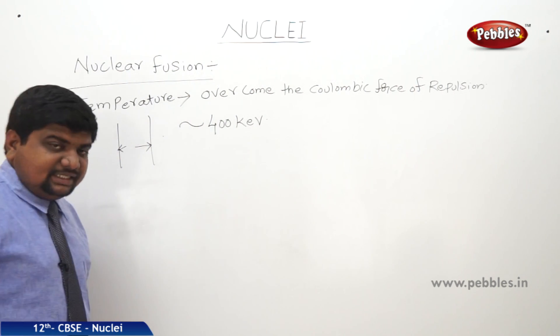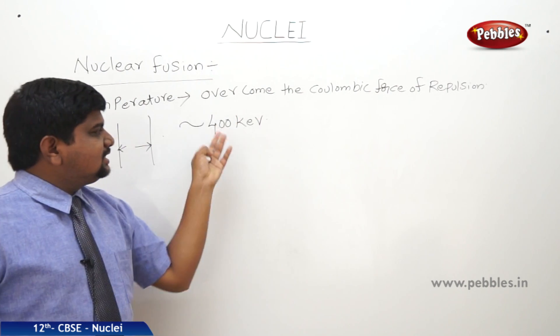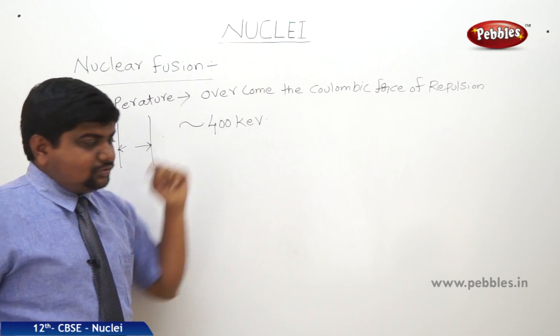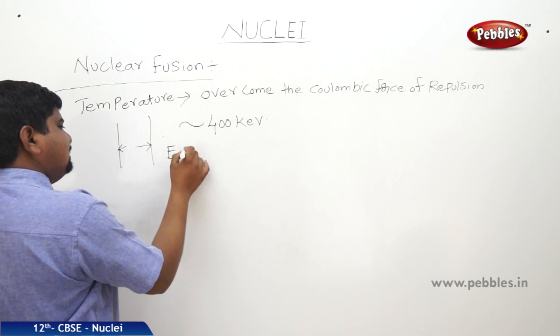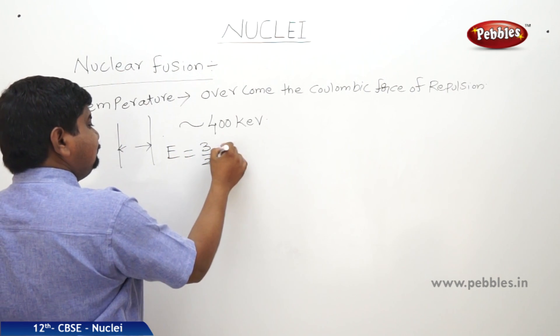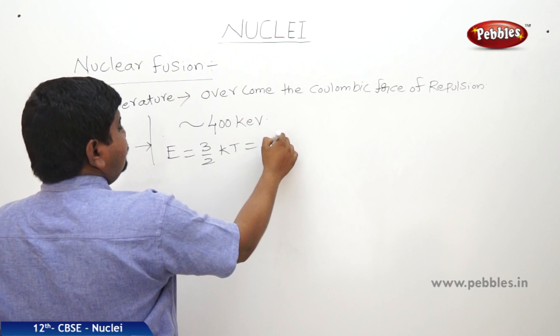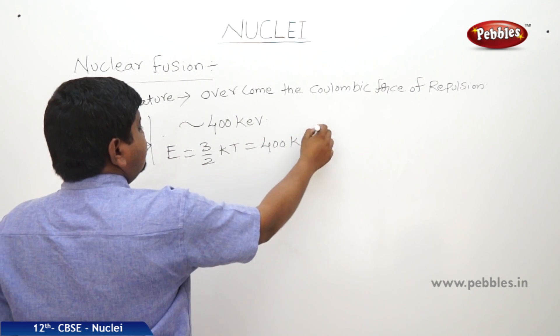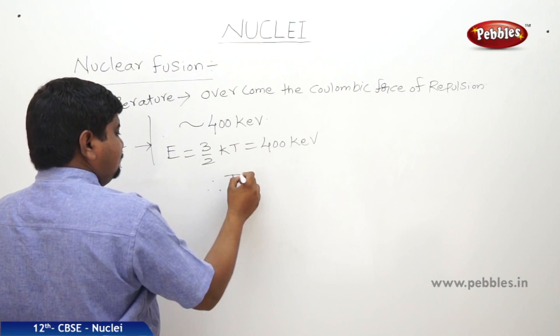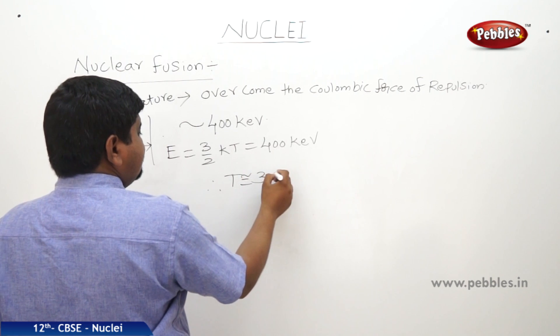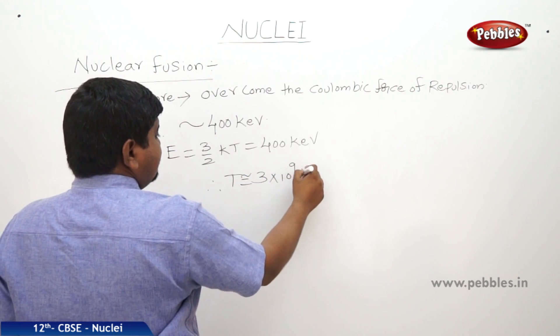Now the energy, which is nothing but thermal energy, has to overcome this 400 KeV. So energy is equal to 3/2 KT. This is equal to 400 KeV. Therefore temperature will get approximately 3 x 10^9 Kelvin.